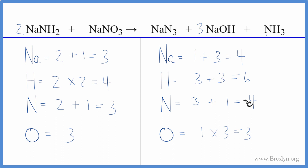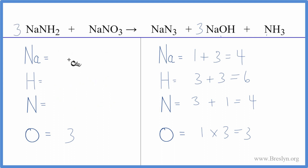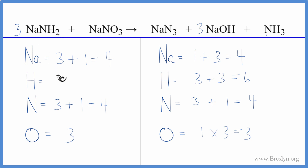I'm thinking I could change this to a three, and that would fix the sodiums. Changing it to a three would also fix the hydrogens and maybe the nitrogen. So I'm going to do that — I'll change this to a three and update everything. Sodium: one times three is three, plus the one sodium — balanced. Nitrogen: one times three is three, plus the one — balanced. Hydrogen: two times three is six — balanced. Oxygens are balanced, and we're done.